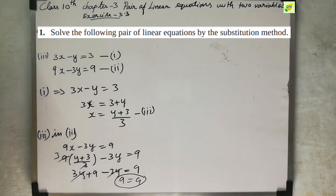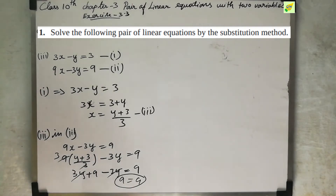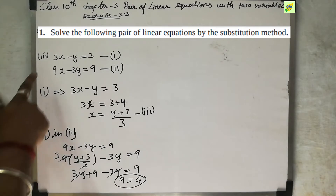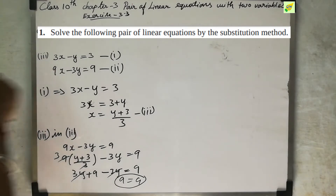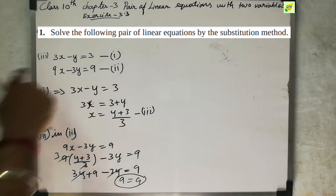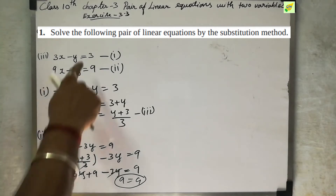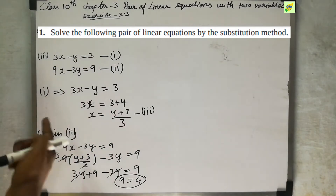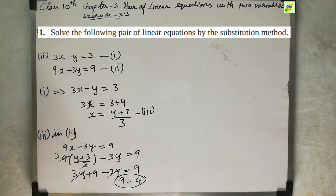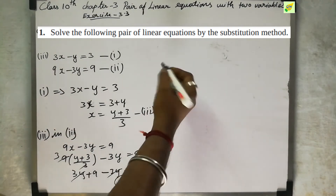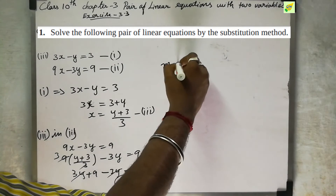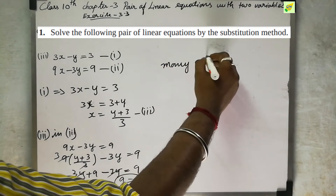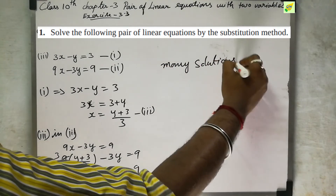We get 9 equal to 9. This is a constant result — it is always true. This means the system has infinitely many solutions.